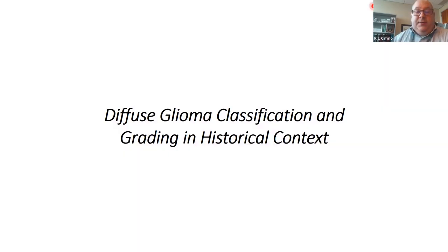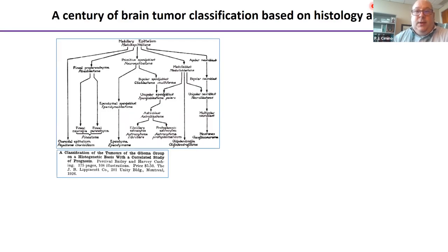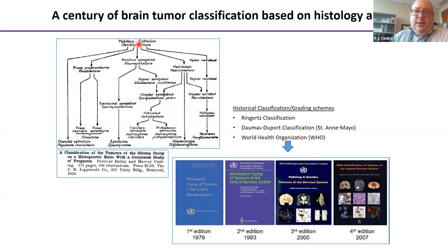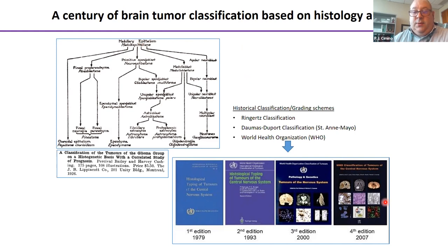Brain tumor classification was formalized in the 1920s with Bailey and Cushing, using an algorithm to define tumors by their presumed cell of origin — things like ependymomas, gliomas, et cetera. Over the last hundred years, there have been different classification and grading systems based solely upon histology. The current WHO system, the 2007 edition when I was a resident, still had classification based entirely on histology.